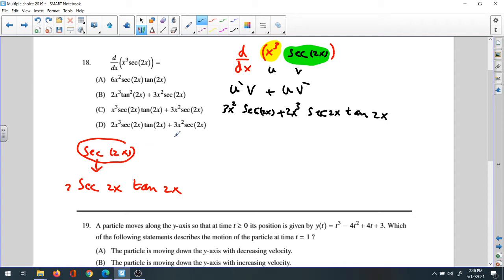Looking at question 18, you get 3x²sec(2x) plus 2x³sec(2x)tan(2x). You could switch the terms, that's okay. So the answer is 18D.